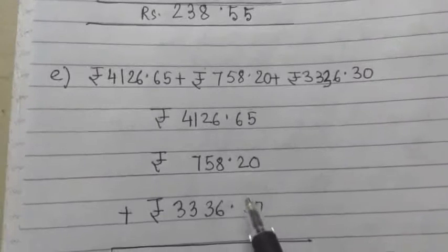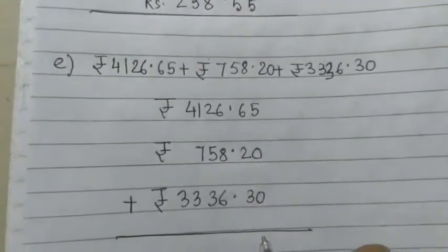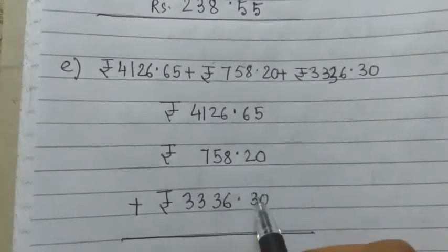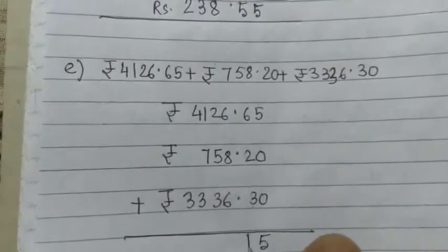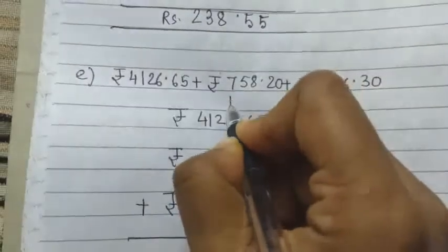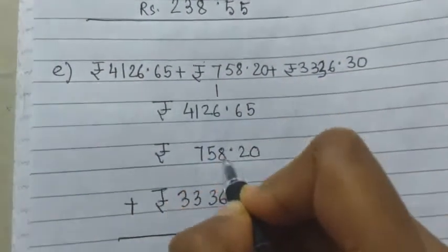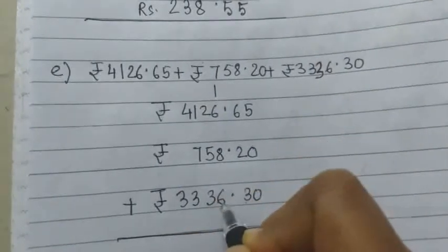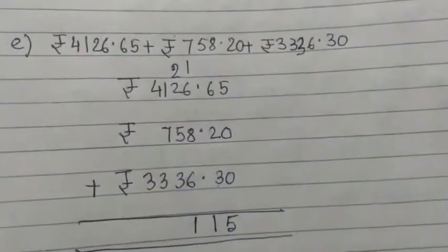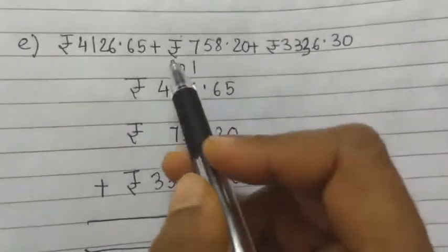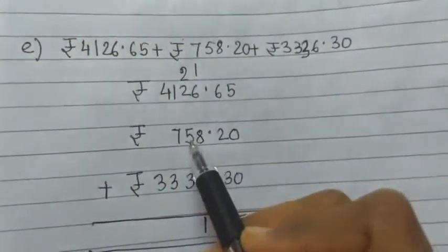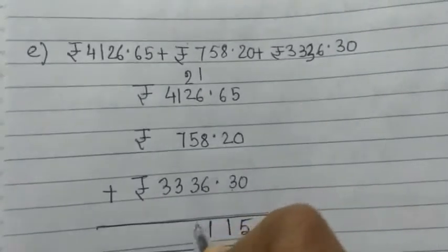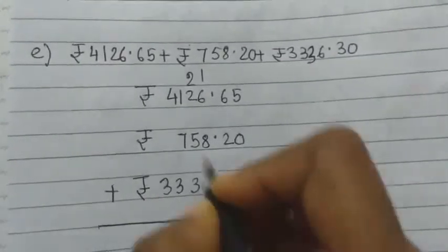Now add together. 5, 6 plus 2 equals 8, plus 3 equals 11, write 1 here, carry 1. So 1 plus 6 equals 7, 7 plus 8 equals 15, 15 plus 6 equals 21, write 1 here, carry 2. 2, 2 plus 2 equals 4, 4 plus 5 equals 9, 9 plus 3 equals 12.